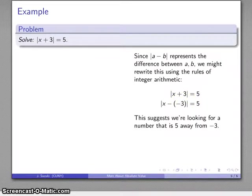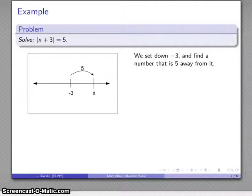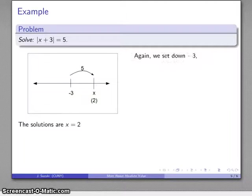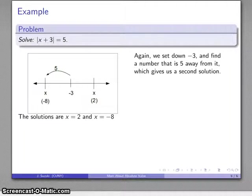So I'm looking for a number that's 5 away from negative 3. So I'll set down my negative 3, and it's possible that x is 5 more than negative 3, which tells me that x has to be 2. The other possibility is that x is 5 less than negative 3, and that tells me that x has to be negative 8. And so there are my two solutions.